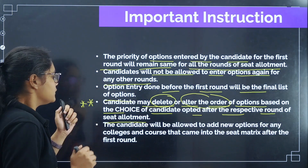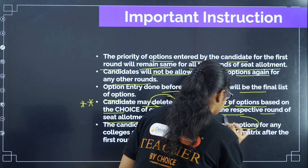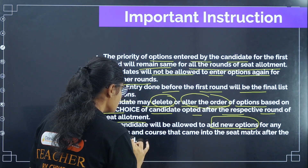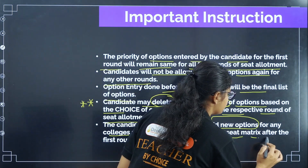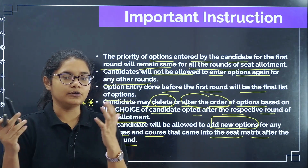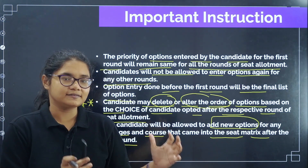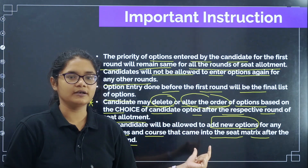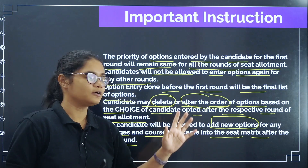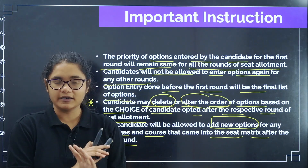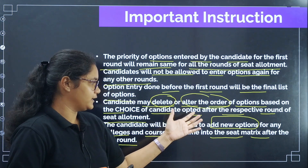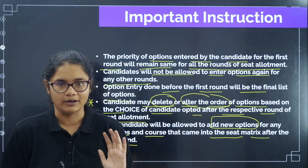There is one chance where you can add new options: if any colleges and courses come new in the seat matrix after the first round. In case any new seat is added to the seat matrix after the completion of Round 1, then those seats can be added to the option entry list. But if no new seat is added, you cannot add any other options or preferences after the Round 1 allotment.